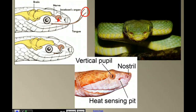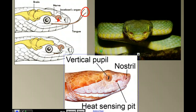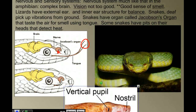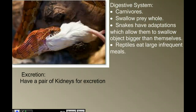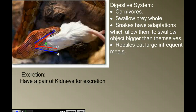Some snakes have heat-sensing pits in their snout, which allow them to find warm-blooded prey in the dark — feeding on mammals or birds. These types of snakes are called pit vipers. When we look at the digestive system in reptiles, reptiles are carnivores — they don't bite and chew but swallow their prey whole. Snakes have a unique adaptation that allows the back of their jaw to unhinge, so it can open wider and allow prey even larger than their jaw to be swallowed.